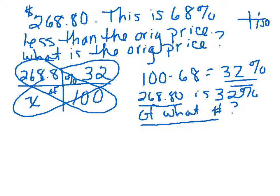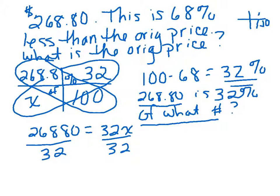And then our favorite thing: cross multiplying. $268.80 times 100 equals 32X. So we need to divide both sides by 32. Let me just do that and see what I get.